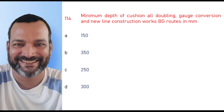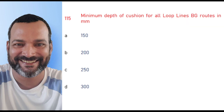Minimum depth of cushion for all doubling, gauge conversion, and new line construction works on BG roads in main line is 300 mm. Minimum depth of cushion for all SWR track BG routes in main line is 250 mm.